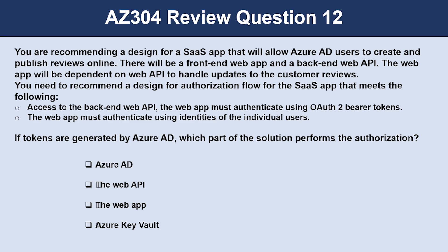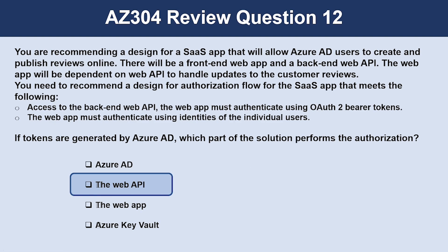Question number twelve. You are recommending a design for a SaaS app that will allow Azure AD users to create and publish reviews online. There will be a front-end web app and a back-end web API. The web app must authenticate using OAuth2 bearer tokens and must use identities of individual users. If tokens are generated by Azure AD, which part of the solution performs the authorization? The correct answer is the web API. Azure AD is used as the identity provider that generates the access tokens, and authorization is managed by the web API.